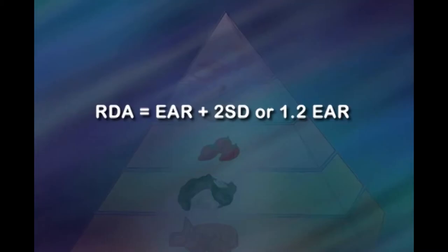RDA is derived from individual variability and nutrient bioavailability from the habitual diet. The equation used to calculate RDA is: RDA = EAR + 2SD, or 1.2 × EAR. Age, gender, growth, and physiological conditions are some factors which affect the RDA.